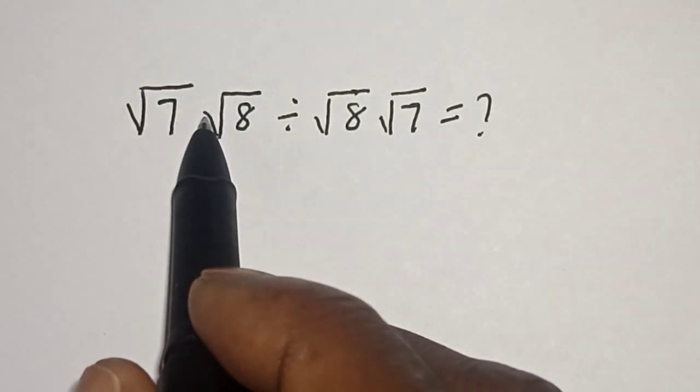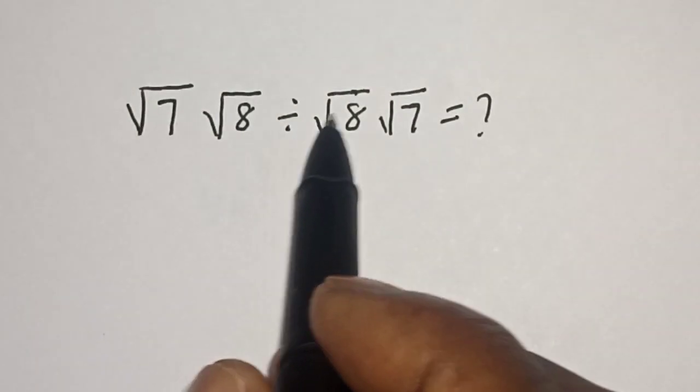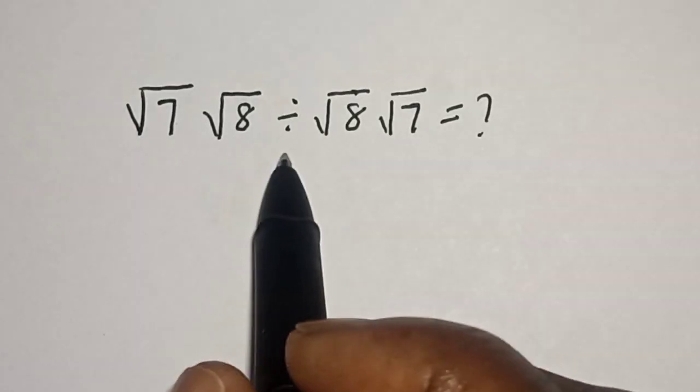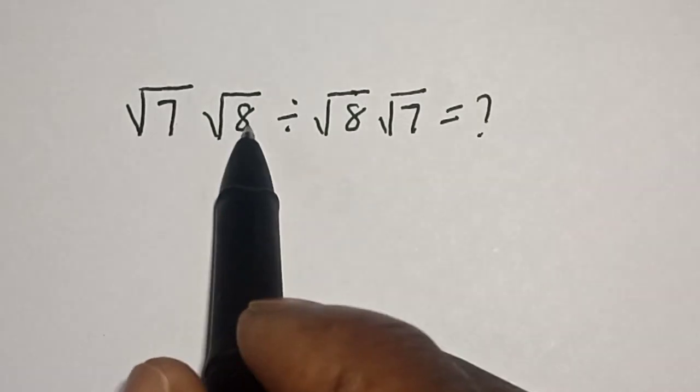Square root of seven multiplied by square root of eight divided by square root of eight multiplied by square root of seven is equal to what? Hi everyone, welcome to my class. In this class we want to evaluate this nice square root problem.